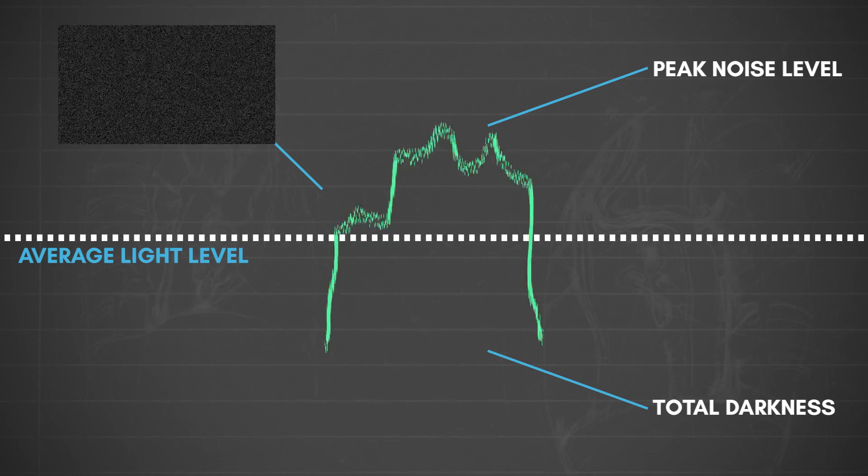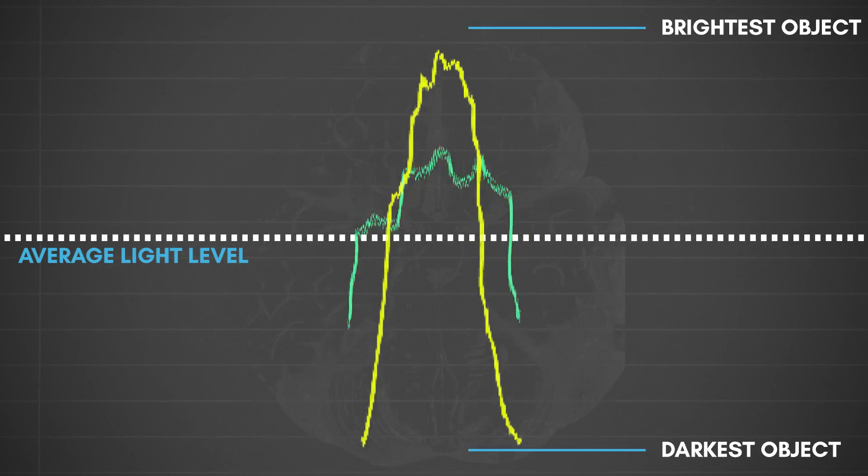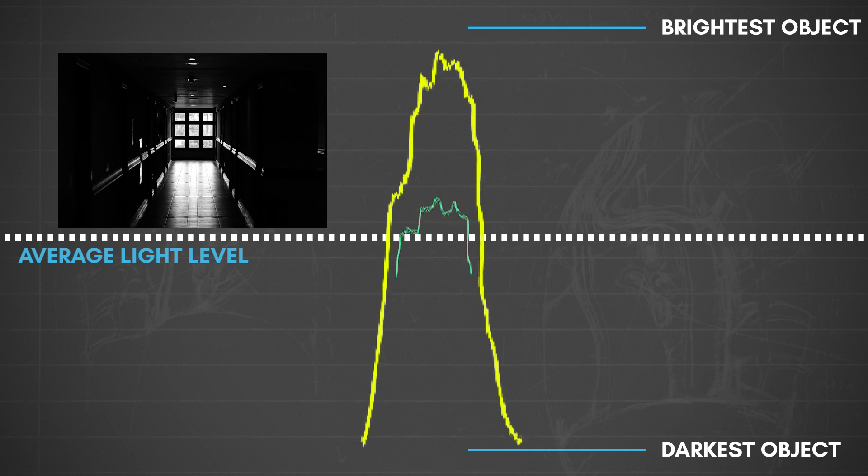With our eyes open and taking in light, the contrast of that noise is dwarfed by the contrast of the world around us. The relative intensity of a dark object is much further away from a bright object when compared to the intensity of visual noise.